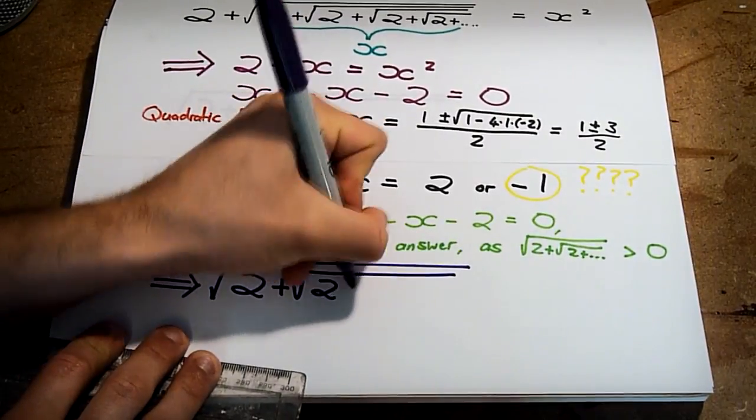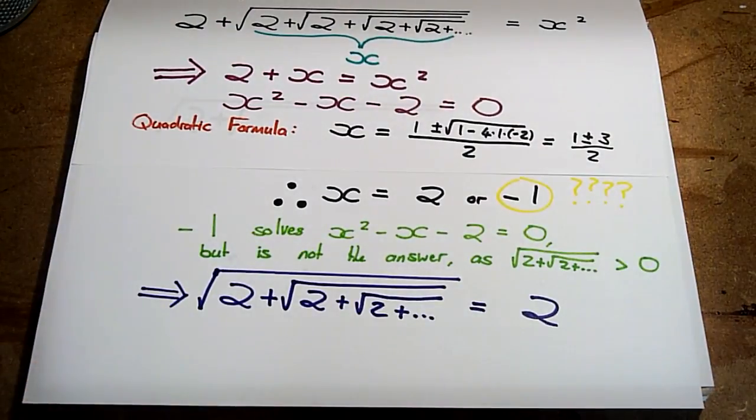And so the square root of 2 plus the square root of 2 plus the square root of 2 equals 2.